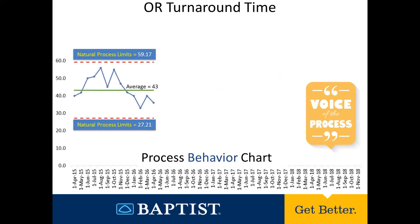We see here on the screen a process behavior chart of OR turnaround time for a hospital. We have a run chart of the operating room turnaround time for each month, and then we have calculated natural process limits — those red dashed lines on both sides of the average, which is that solid green line on the screen. We have created what is known as the process behavior chart, which is the voice of the process. The process behavior chart allows you to differentiate between routine, normal variation and exceptional variation.